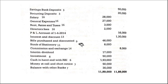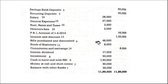Bills purchased and discounted — this is also advances, giving it to the public. See, all these things are on the debit side. This is like how we treat bills receivable — same thing. Bills receivable is an asset, so bills purchased and discounted is also an asset. It comes under Schedule 9 as advances. Then stock of stationery — other assets, Schedule 11. Commission and exchange — other income, Schedule 14.